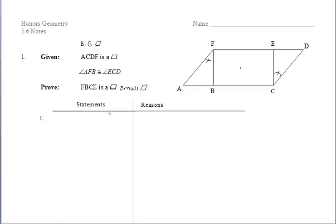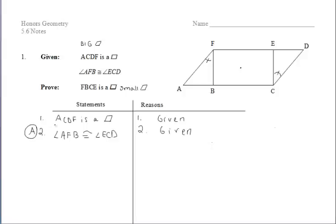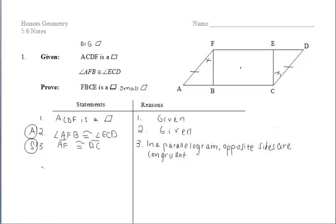Let's write down our givens. Because of the congruent angles given, we already have a pair of congruent angles within triangles AFB and DCE. Since the large figure is a parallelogram, we can state that opposite sides AF and DC are congruent — the reason being that in a parallelogram, opposite sides are congruent. That gives us another pair of congruent sides within the triangles.